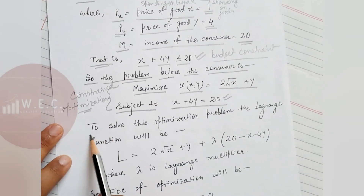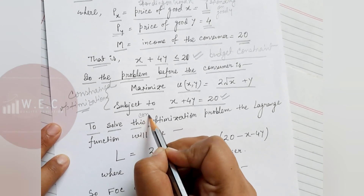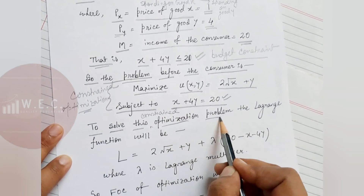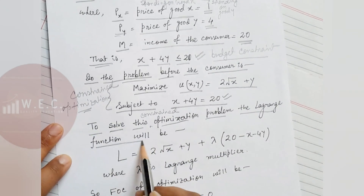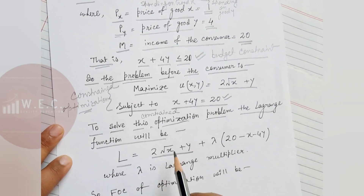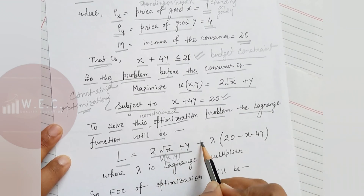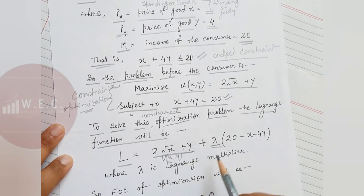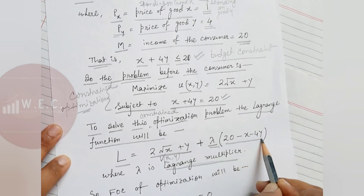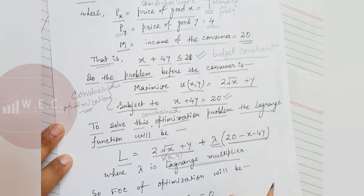To solve this constrained optimization problem, we first form the Lagrange function. The Lagrangian is L = 2√x + y + λ(20 − x − 4y), where λ is the Lagrange multiplier.